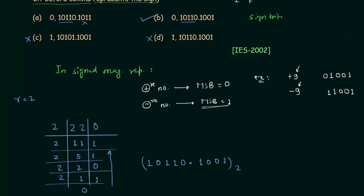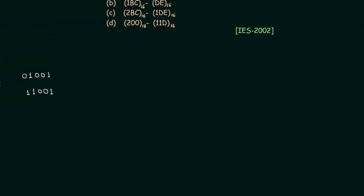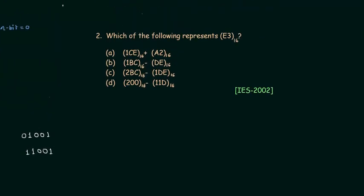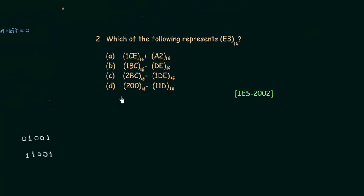Now we will move to the second problem. In the second problem we have to evaluate the four options and check whether the answer equals E3 in hexadecimal. Let's look at option A, where we have to perform the operation 1CE (hexadecimal) plus A2 (hexadecimal).